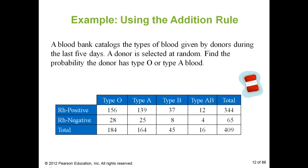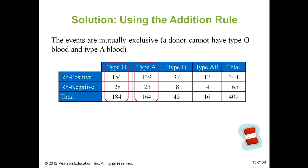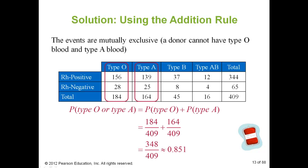Finally, we're going to look at a blood bank catalog. I want to find the probability that a person has either type O or type A blood. They can't have both at the same time, so these are mutually exclusive. The probability of type O blood is 184 out of 409, and the probability of type A blood is 164 out of 409. Together they make up 348 out of 409, which is roughly 0.851.